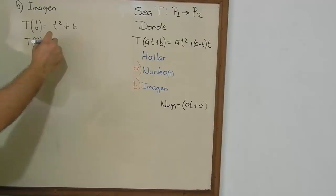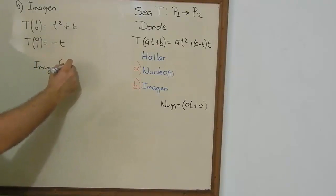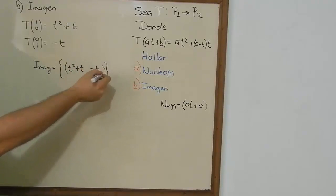And you do the same for the next vector, which is going to be (0, 1). And the answer is minus t. As you can see, the only one alive is t because A is equal to 0. So the range is going to be the polynomial t² plus t and minus t. And that is the range.